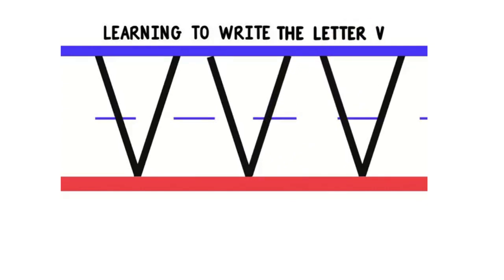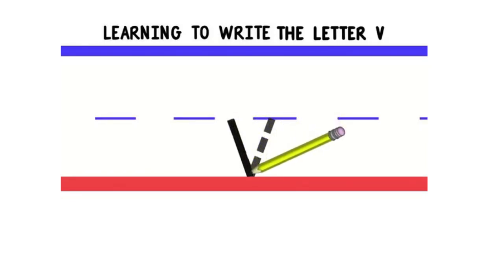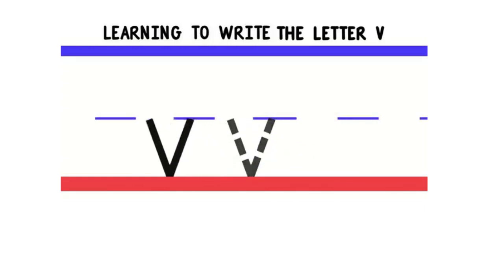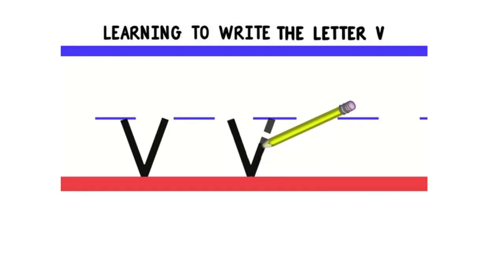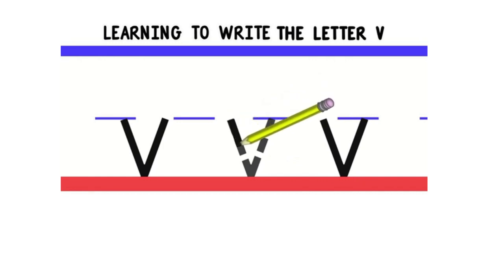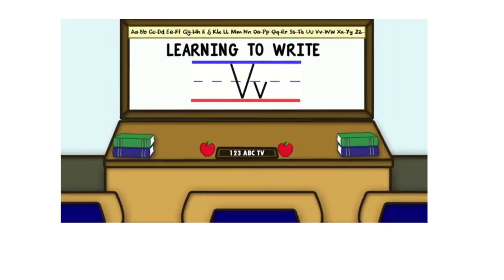Good job! Now you try. Good job! Now let's move on to lowercase or little V. To write lowercase V, we'll start in the middle and do a diagonal line down. Then we'll do a diagonal line back up. Good job! Let's do that again. We'll start in the middle and do a diagonal line down. Then we'll do a diagonal line back up. Good work! Now you try. Good job! Now you know how to write the letter V.